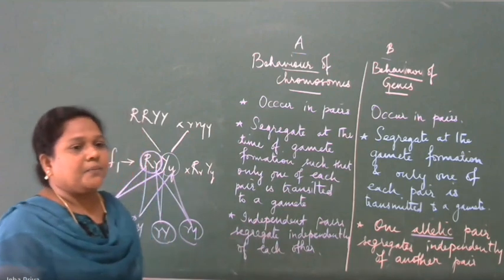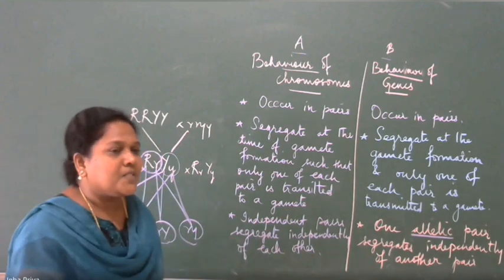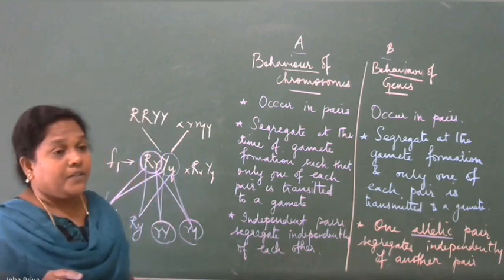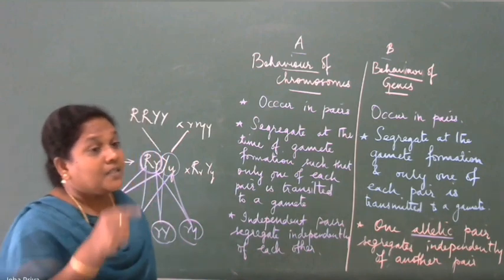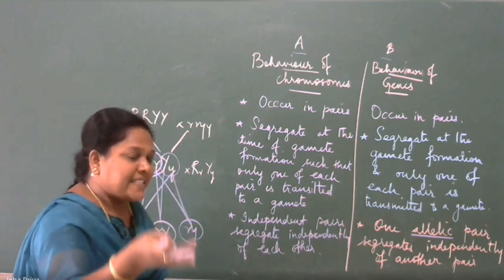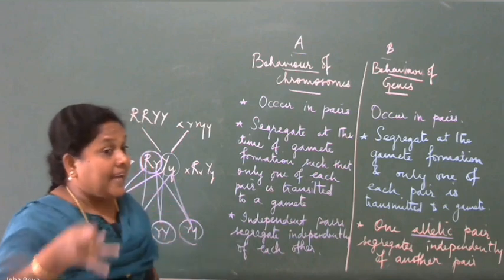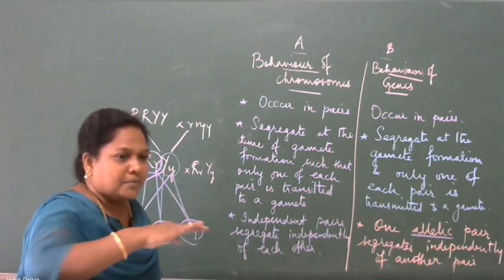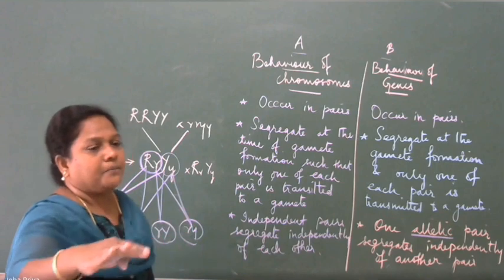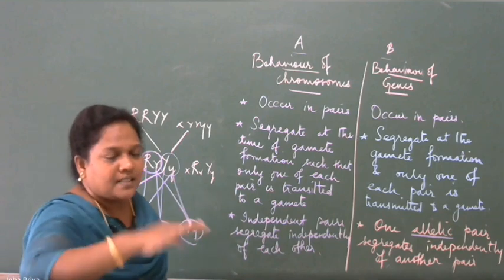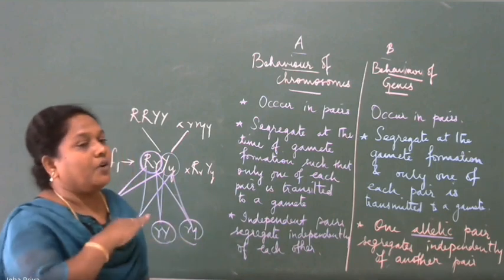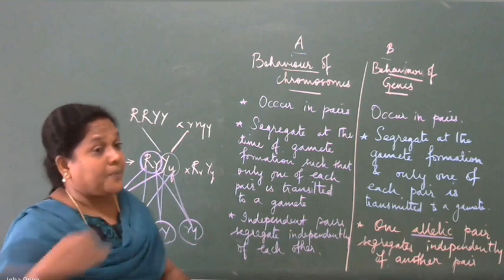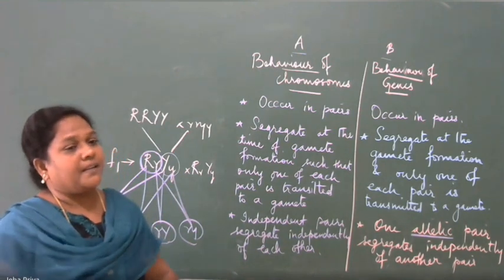When does it take place? When the two chromosomes align in the metaphase plate — you know that. After that: prophase, metaphase, anaphase. In metaphase what happens? The chromosomes align in a straight line.